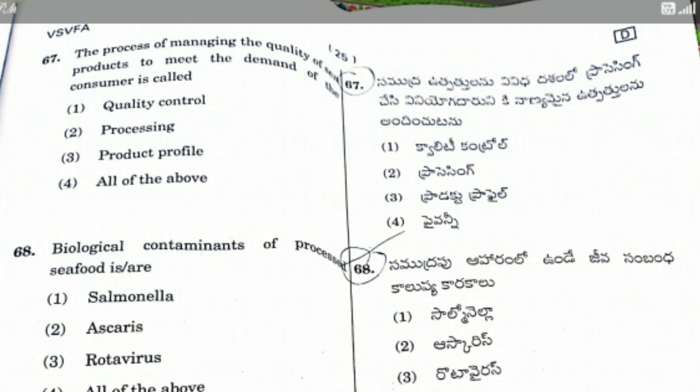Question 67: The process of managing the quality of seafood products to meet the demand of the consumer is called — the right answer is Quality Control.